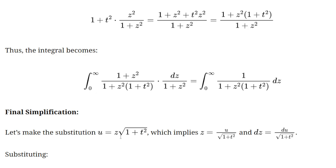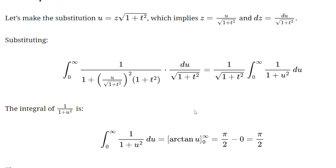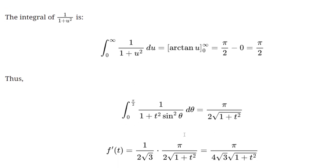With u equal to z times square root of one plus t squared, we have z equal to u over square root of one plus t squared, and dz equal to du over square root of one plus t squared. Plugging that back in, we get a standard integral that clearly evaluates to pi over two. Don't forget to multiply by one over two square root of three — that gives us our f prime of t.